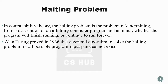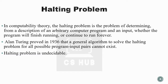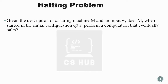Alan Turing proved in 1936 that a general algorithm to solve the halting problem for all possible program-input pairs cannot exist. The halting problem is thus undecidable. Decidability means if we are given an input to a Turing machine, it will halt — either accept or reject — and will not go into an infinite loop. Such types of problems are known as decidable problems, but the halting problem is undecidable.